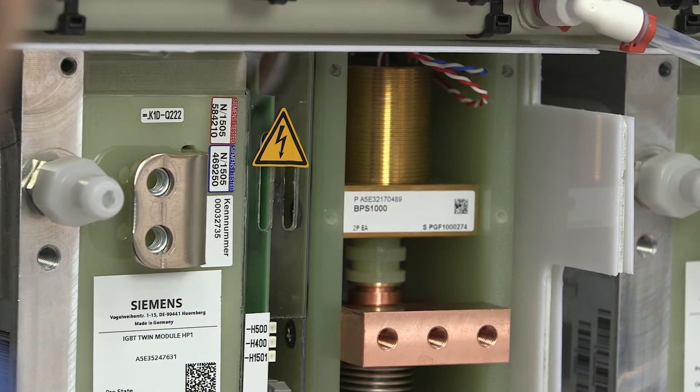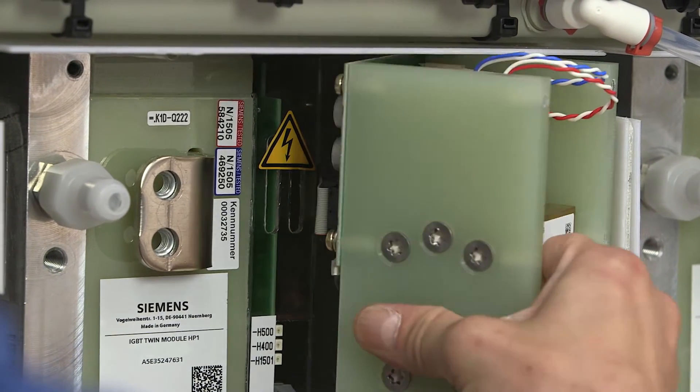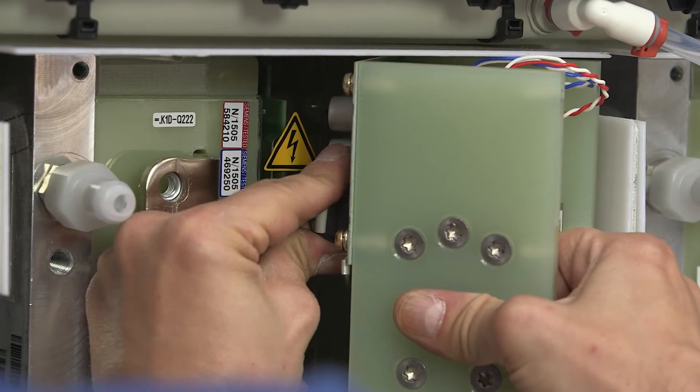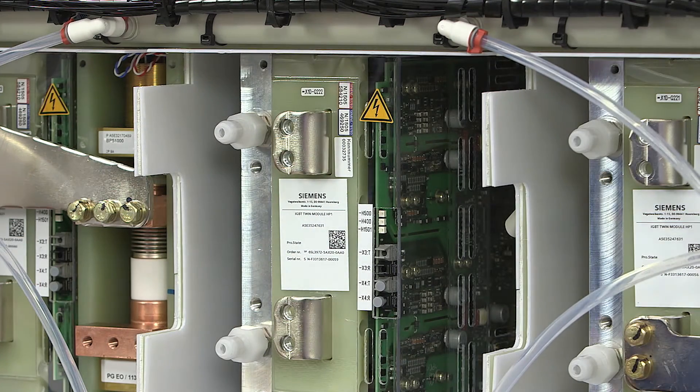Pull the bypass switch partly out to have access to the connection cable at the rear of the bypass. Please disconnect this cable from the back of the bypass switch, and then pull the bypass switch out completely.